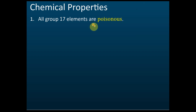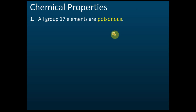All Group 17 elements are poisonous, so you shouldn't inhale or eat them. When you do experiments with these poisonous gases, you must be very careful. For example, swimming pools add chlorine, but because the swimming pool is so large, the chlorine is very dilute.